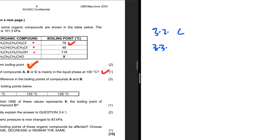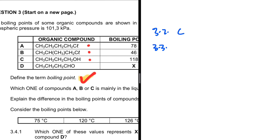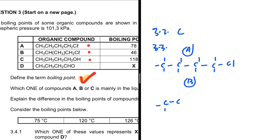Question 3.3 asks us to explain the difference in the boiling points of compounds A and B. Let's take a look at both compounds and see how they differ. They are all haloalkanes, but they differ in branching. Compound A has a straight-chain structure, while compound B has a branch — an additional carbon branch with a chloro group — so compound B is more branched than compound A.